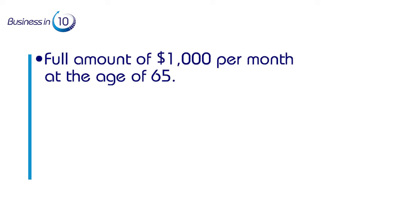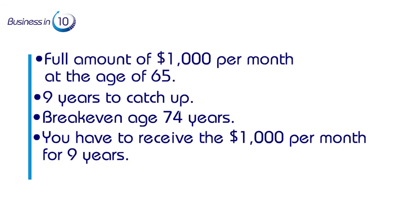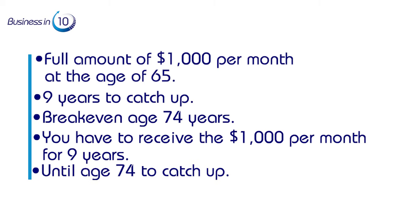On the other hand, if you choose to wait and receive the full $1,000 per month starting at age 65, it will take you nine years to catch up — making the break-even age 74. This means you have to receive $1,000 per month from age 65 for nine years until age 74 to catch up with the alternative of $640 starting at age 60.